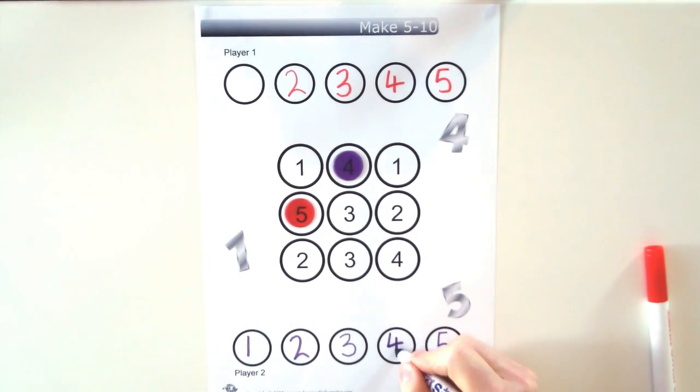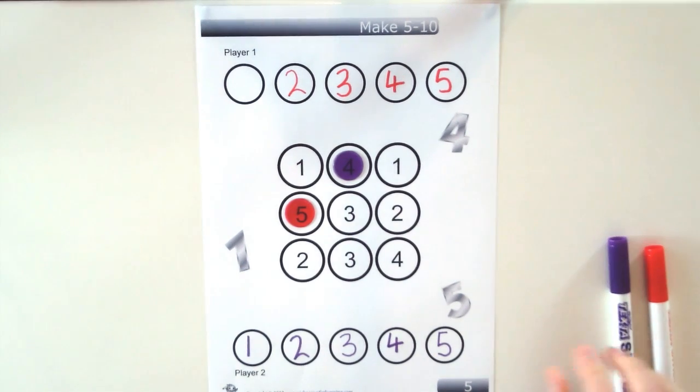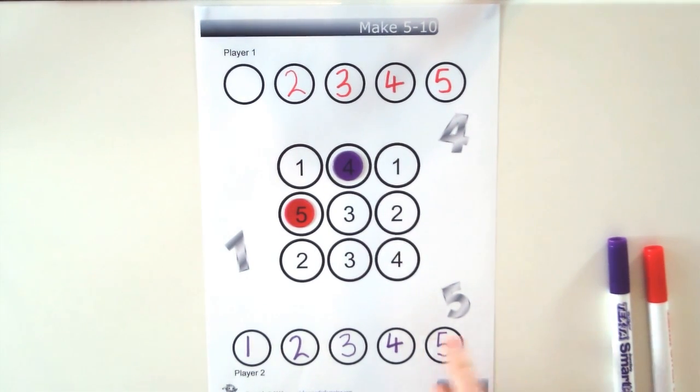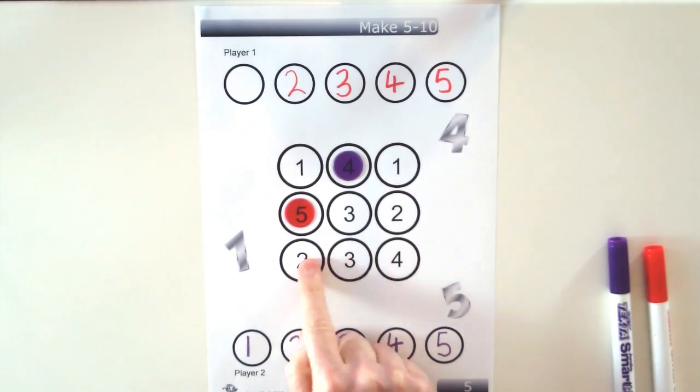So as you can see, even though red started first, so they kind of had an advantage to be able to finish first, but actually because they wasted a turn, purple ended up winning.